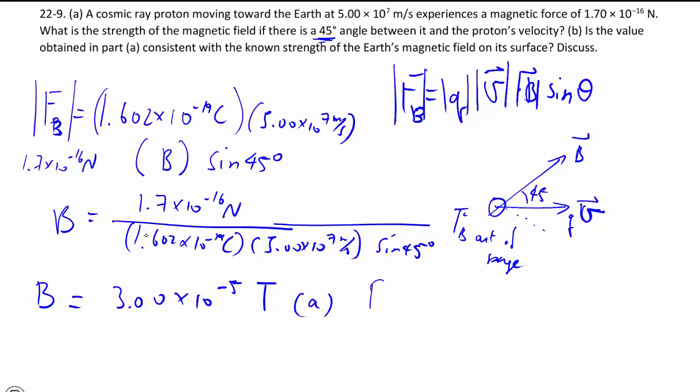In terms of part B, I'll remind you that on Earth, near the surface of the Earth, the magnetic field is roughly 5 times 10 to the minus 5 tesla. So if you're slightly further away from the Earth, being a cosmic ray proton, you will experience a magnetic field that's slightly less than that, and it all seems to make sense.